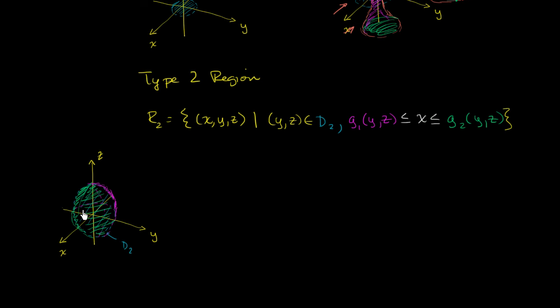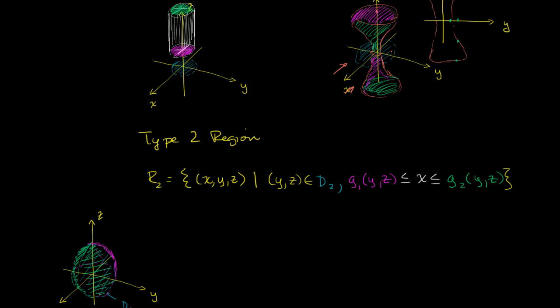So a sphere is both a type 1 and a type 2 region — and we're going to see it's going to be a type 3 region as well. What about this cylinder? Can we think about it in a way that it would actually be a type 2 region?